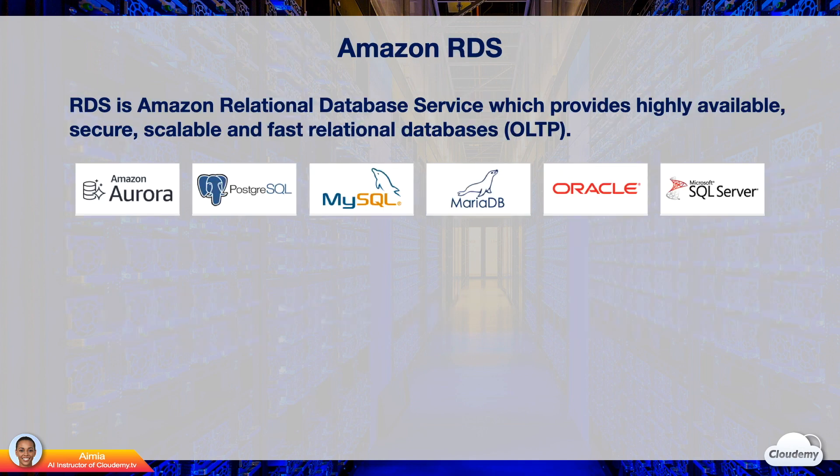Amazon RDS stands for Amazon Relational Database Service. It provides highly available, secure, scalable, and fast relational database options for your OLTP applications. RDS has a wide range of use cases — they are ideal for applications that require data integrity and perform frequent transactional reads and writes. There are six database engines to choose from.